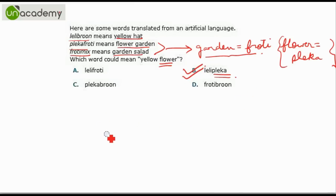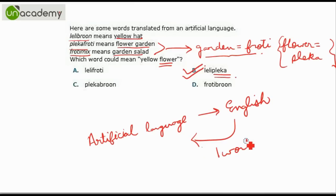So we found out that some words are translated from artificial language to English. And we have to find out one word from English to artificial language. That is all about the artificial language problems.